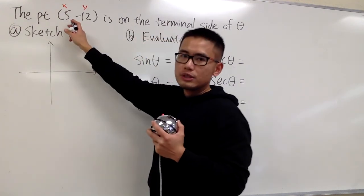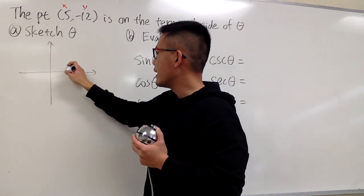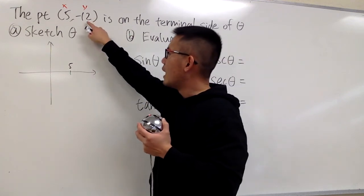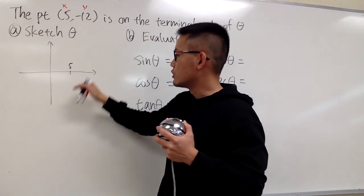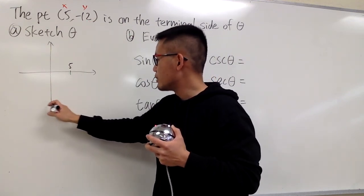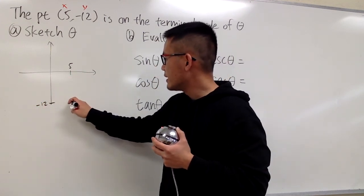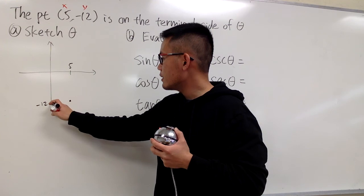We know the x value is 5, and let me just label this right here as my 5. You don't have to draw the little lines. And the y value is negative 12. So I'll just put this down below here. Let's say this right here is negative 12. And we have a point, 5 comma negative 12, which is right here.